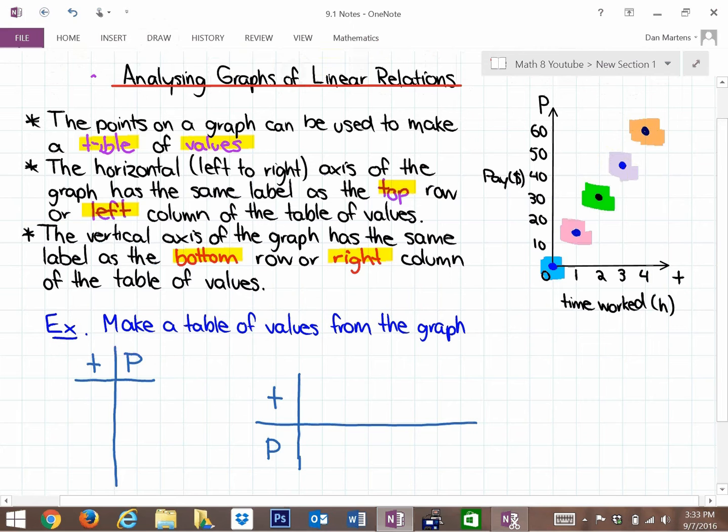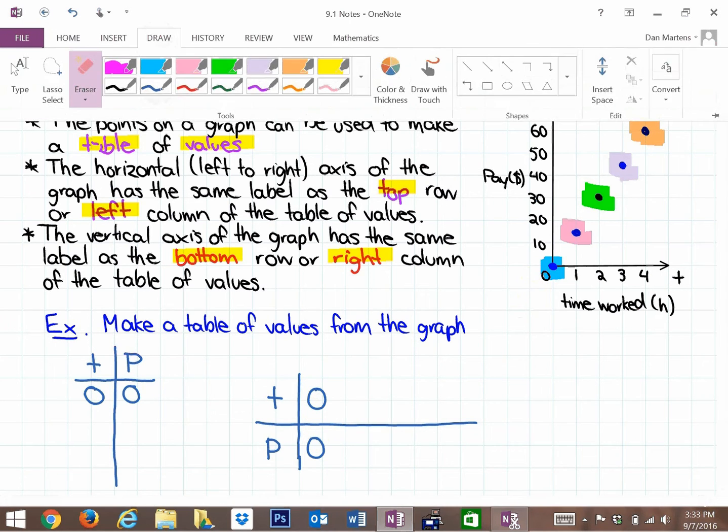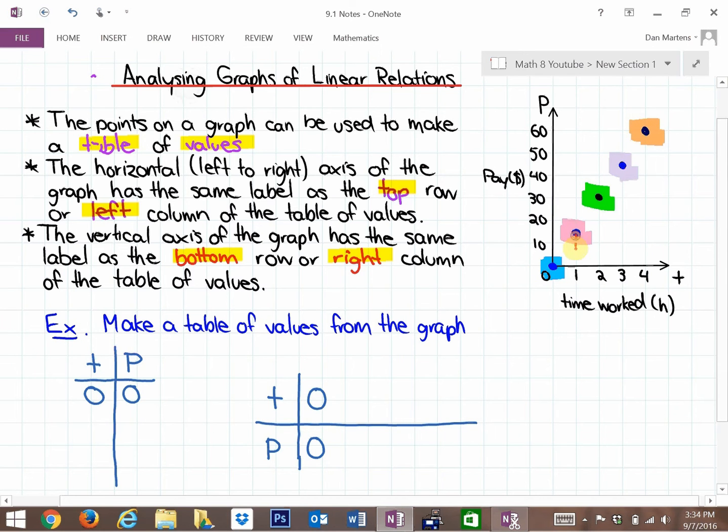This first point, that point that's in blue, has the coordinates 0, 0. It lines up with the 0 and the 0 on each axis. Whereas the second point, which is in pink, lines up with 1 and right in between 10 and 20, which is 15. So 1 is where it lines up with the T axis, and 15 is where it lines up with the P axis.